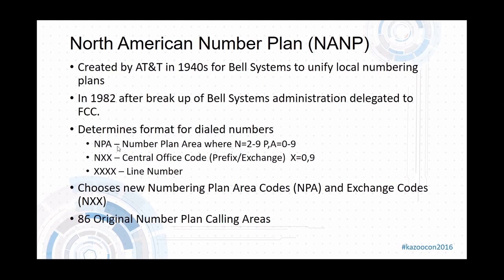The North American Numbering Plan states that any phone number is going to be 10 digits. The first three are the Number Planning Area, where the first digit is any digit between two and nine, and the second and third can be any digit between zero and nine. Your next set of three is your prefix and exchange, where N represents any digit between two and nine and X any digit between zero and nine. The last four are your line number, which can be any digit between zero and nine.